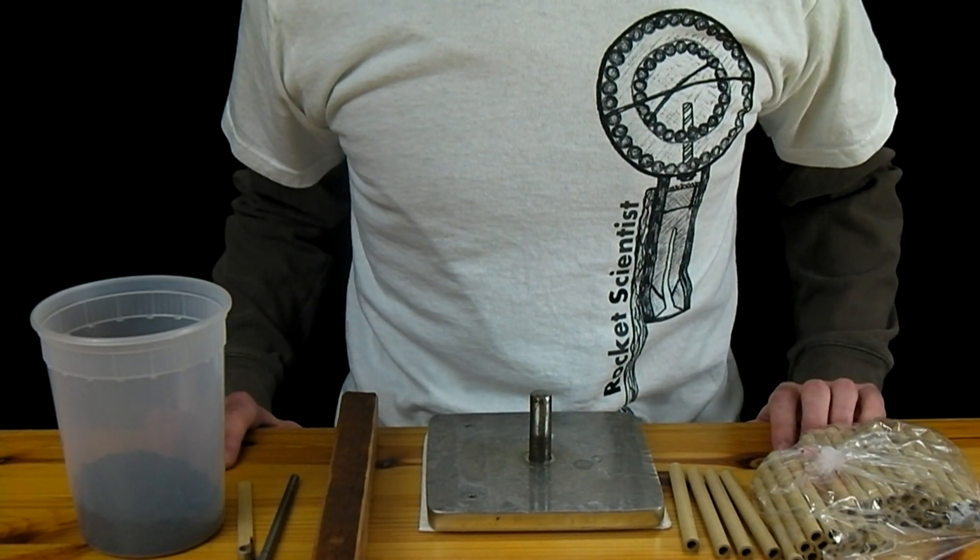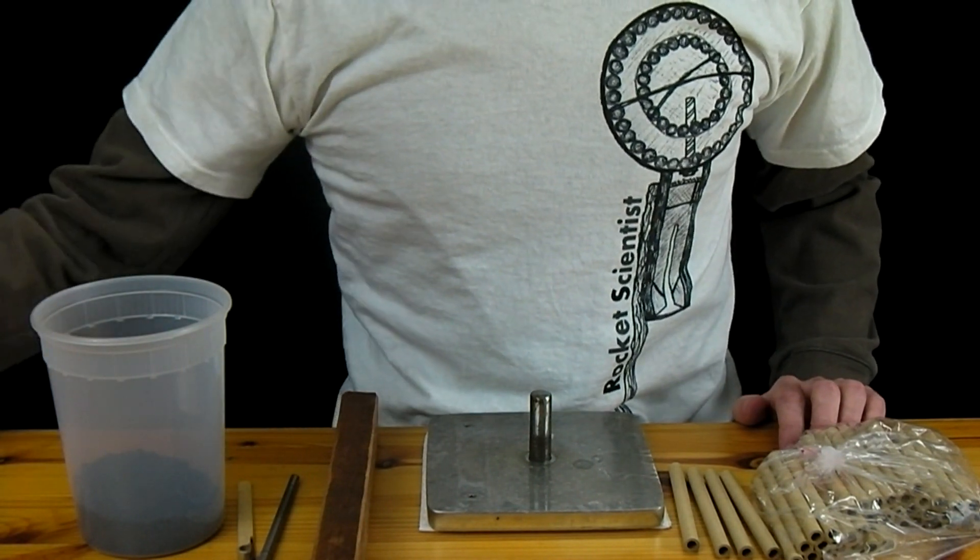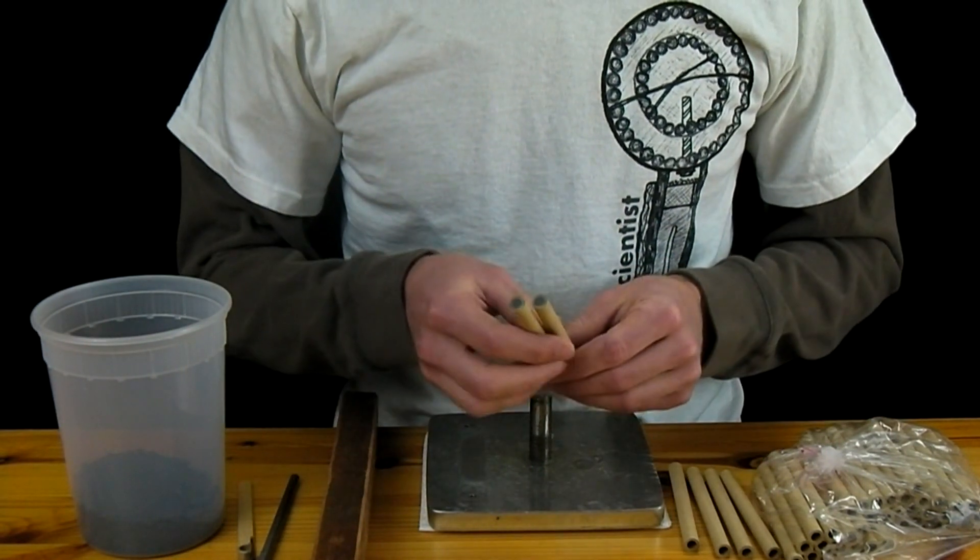In this video I'm going to go over how to make a very basic firework component, spolets. Spolets are used to time when shells are going to break in the sky.